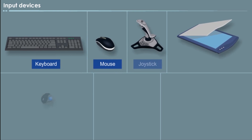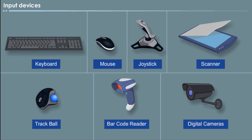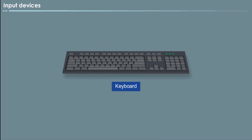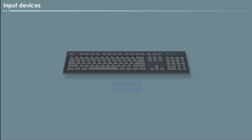Let us discuss about the input unit. An input device for a computer allows you to enter information or accepts data from the user. Keyboard, that is input device. The keyboard is used as an input device which feeds various types of information into the computer. There are different keyboard layouts and sizes which are available. The most common layout is the QWERTY layout.